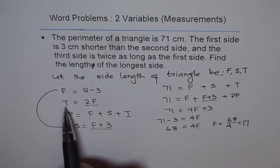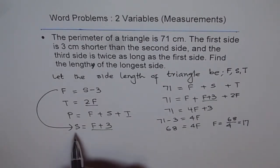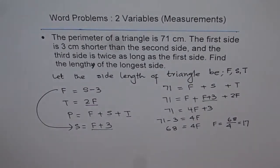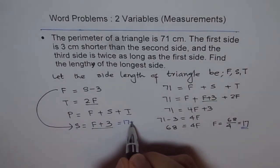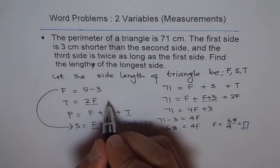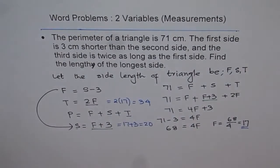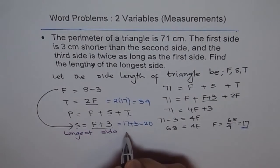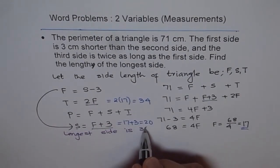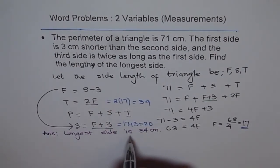The third side is the longest side. With F equals 17, the second side S equals 17 plus 3, which is 20 cm. The third side T equals 2 times 17, which is 34 cm. Therefore, the longest side is 34 cm, and that is the third side. So that is our answer — the longest side is 34 cm.